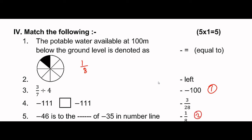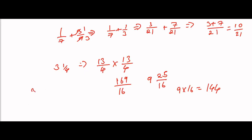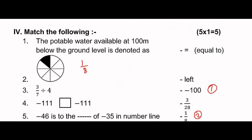Next: 3 by 7 divided by 4. This equals 3 by 7 into 1 by 4. So 3 by 7 into 4 equals 28 in the denominator. Answer is 3 by 28.